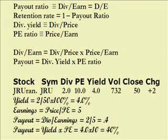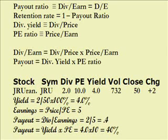Here's an example from a made-up security. The made-up symbol pays $2 a year in dividends — in actuality four quarterly payments of $0.50 each. The PE ratio is the earnings divided into the price, shown here as 10. We don't see the earnings directly, but we have a yield of 4%, which we can confirm: $2 divided by the closing price of $50 is indeed 4%.